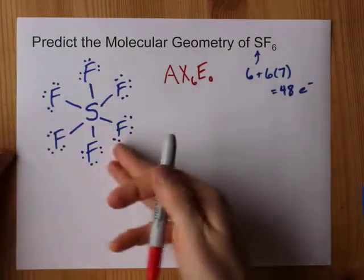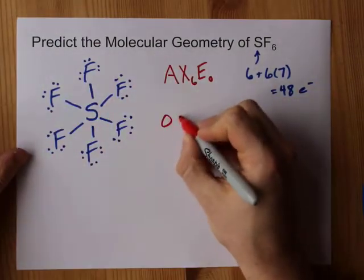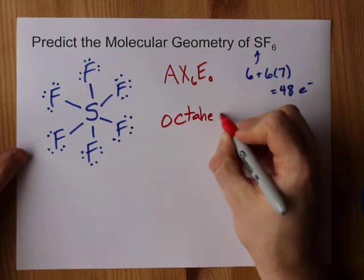I want you to just know that six things with no lone pairs on the central atom is called octahedral geometry.